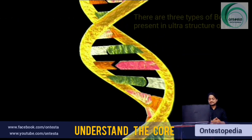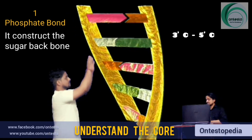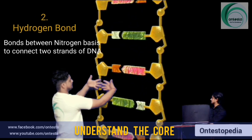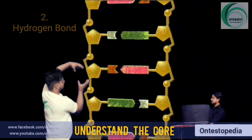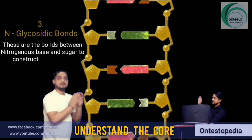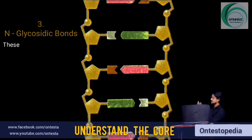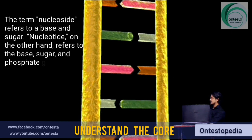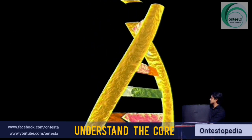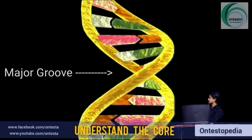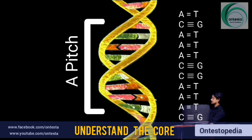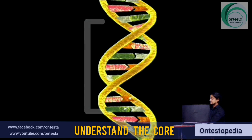There are 3 types of bonds present in the ultrastructure of DNA. The first is the phosphodiester bond, which constructs the sugar backbone by connecting sugar from the 3' to 5' carbon, forming the single strand. The second is the hydrogen bond between nitrogenous bases, which connects the 2 strands of DNA. The third is the N-glycosidic bond, between nitrogenous bases and sugar, which constructs a nucleotide. The term nucleoside refers to the base and sugar; nucleotide refers to the base, sugar, and phosphate group. Observing the coiling of DNA, we find a deep major groove and a minor groove. The complete 360-degree turn of the double helix is called a pitch.